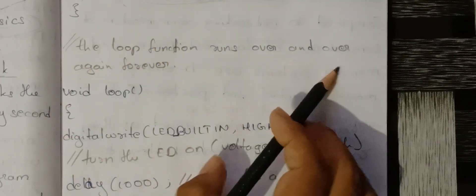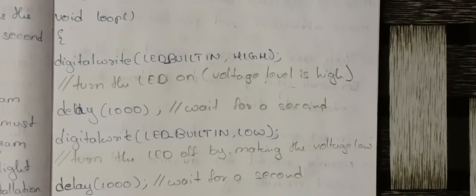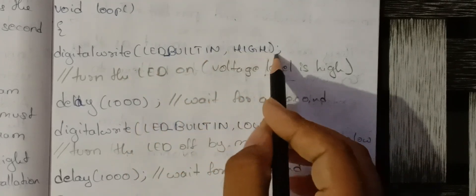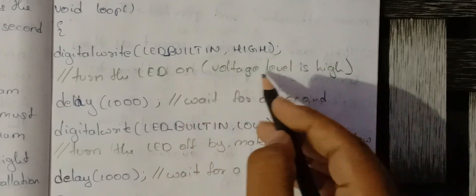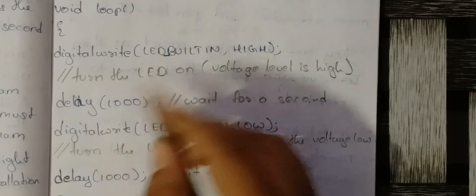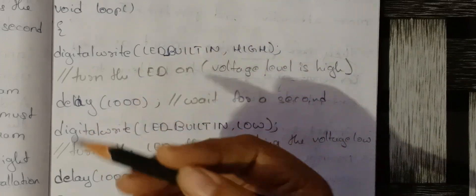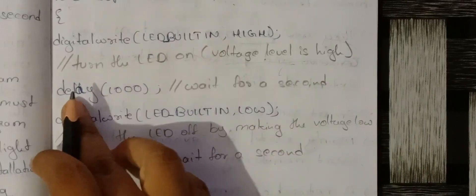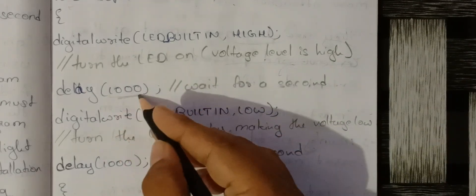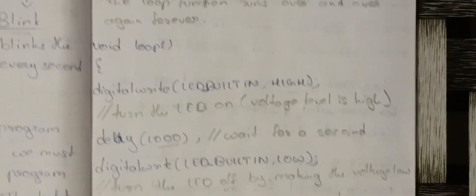The void loop function runs over and over again forever — the loop continues as long as the program is running. In the void loop, digitalWrite(LED_BUILTIN, HIGH) turns the LED on by making the voltage high. Then delay(1000) waits for one second — because one second equals 1000 milliseconds.